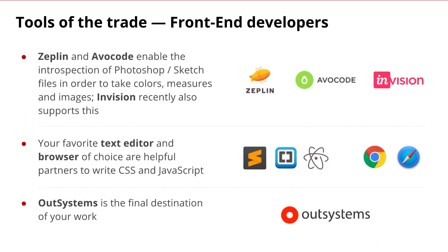Other tools of the trade for front-end development may include Zeppelin and Avocode, which enable the introspection of Photoshop and Sketch files in order to extract visual information such as colors, rules, layout measurements, and images, and bring them into the OutSystems environment. Envision recently added support for these types of features as well. Front-end developers will also typically need a text editor or coding environment, as well as industry-standard browsers. Remember that Android uses the Google Chrome browser and iOS uses the mobile Safari browser, so these should be used for testing during the initial phases of development. Finally, the OutSystems front-end developer's goal is to use all of these tools with the OutSystems platform being the final destination.